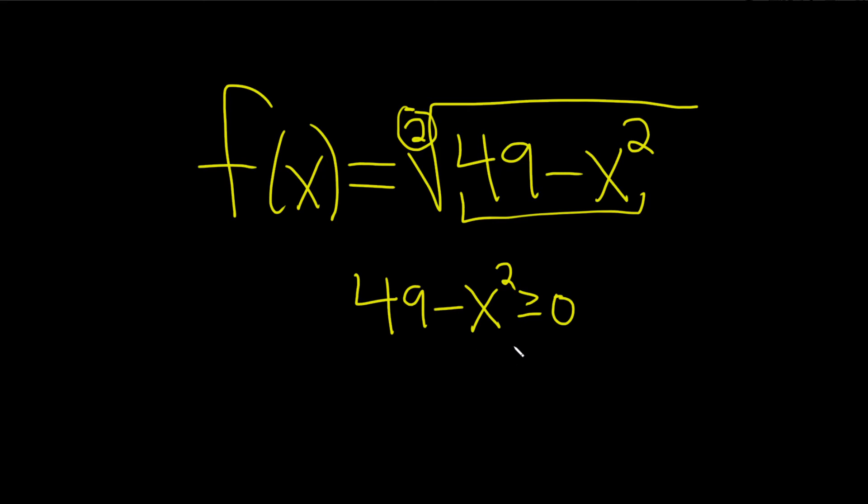So we have to solve this inequality. The easiest way to do it, or one way to do it rather, is to think about the graph of this function. If you were to let y equal 49 minus x squared...